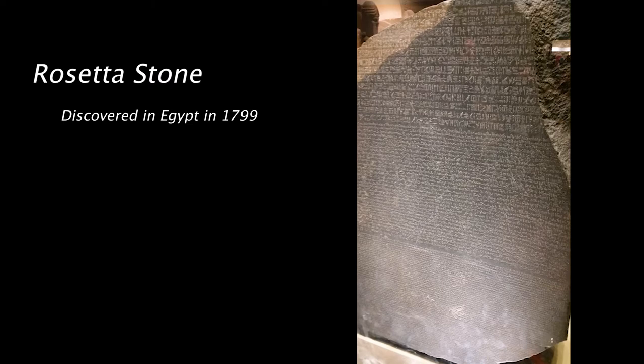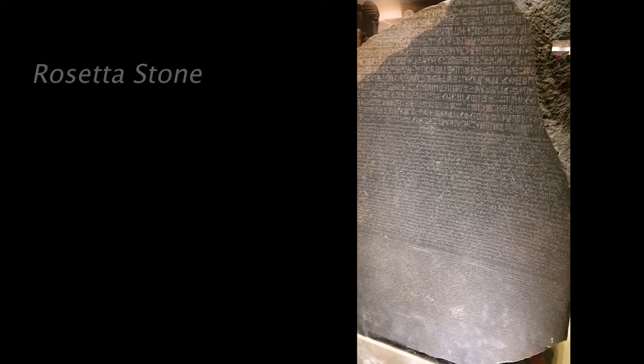The Rosetta Stone is currently held at the British Museum. If you can't fly overseas to see it, you can check out plenty of other Egyptian artifacts at the Princeton University Art Museum in Princeton, New Jersey. Museums play an important part in preserving culture. These artifacts are a reflection of people who lived during a specific time period. Art does the exact same thing.